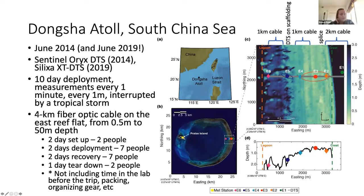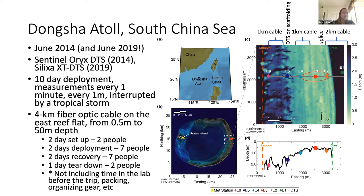The first deployment I'll talk about is from Dongsha Atoll in the South China Sea. The project was designed to study the impact of internal waves on the fore reef and reef flat. We used the DTS laid out on the East Reef Flat where internal waves arrive and shoal, with a four kilometer cable laid out on the reef flat and down the reef slope. We used the Oryx in 2014 and the Silixa XT in 2019.